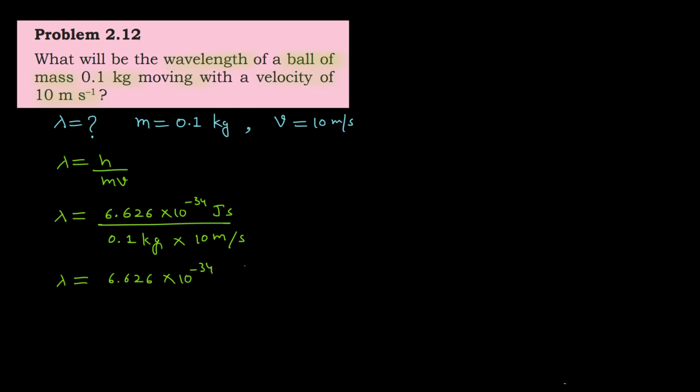See, above there is joule second, here we'll write joule second divided by kg meter. When we move second up, it becomes second square. Now we need to look at the units carefully.